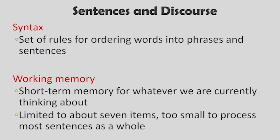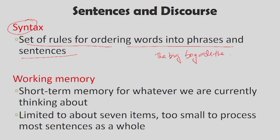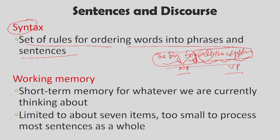The words that form sentences use certain rules called syntax. Syntax is a set of rules for ordering words into phrases and sentences. For example, 'the big boy ate the apples' — 'the big boy' is the noun phrase and 'ate the apple' is the verb phrase. The subject-verb-object structure, or noun-verb-noun pattern that it follows, is what is called syntax. If I say 'big the boy' it is not going to work — there is a particular format, and that is what syntax is.